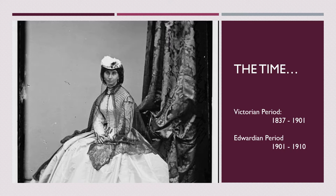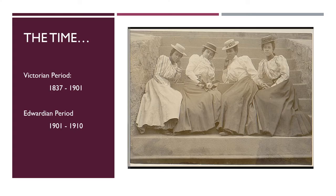The Edwardian period is named for King Edward VII, who ascended to England's throne after Queen Victoria's death in 1901. This time period is generally confused with the Victorian period, which was characterized by ball gown dresses, as seen by the picture, and the Queen's own fashion over her 64 years as Queen.